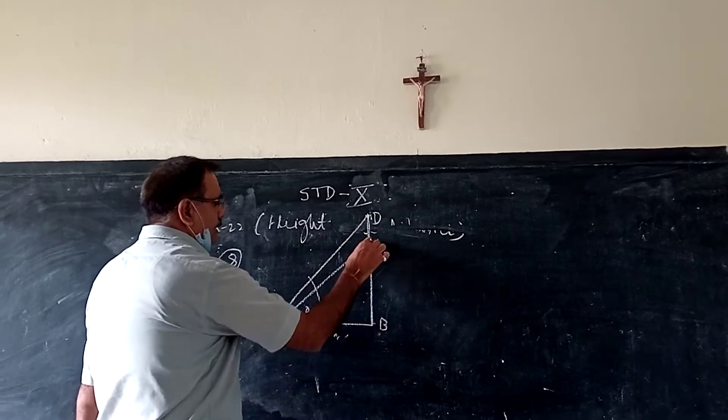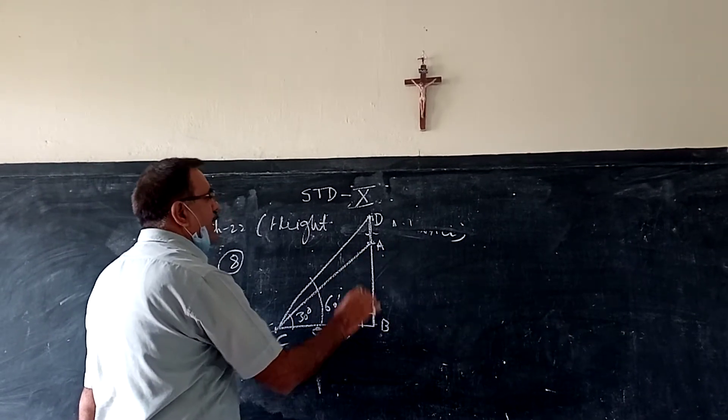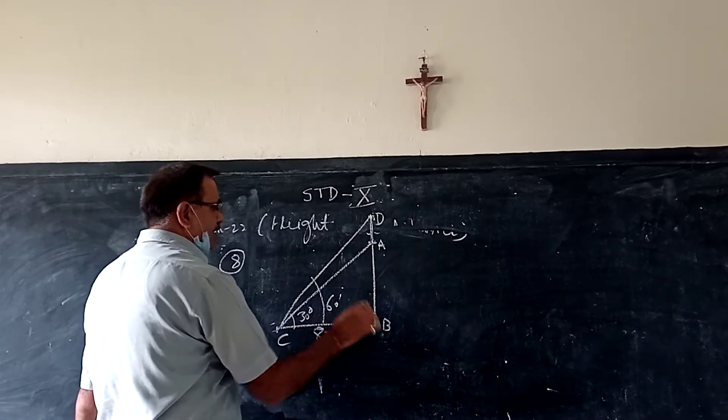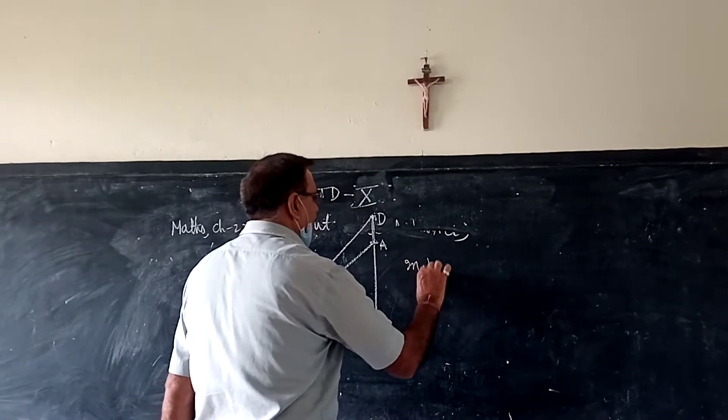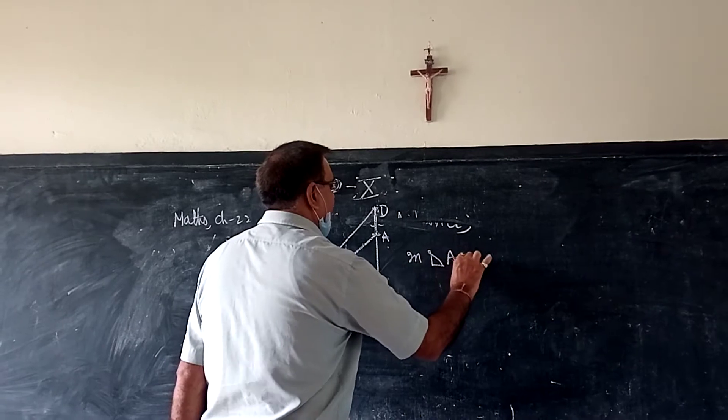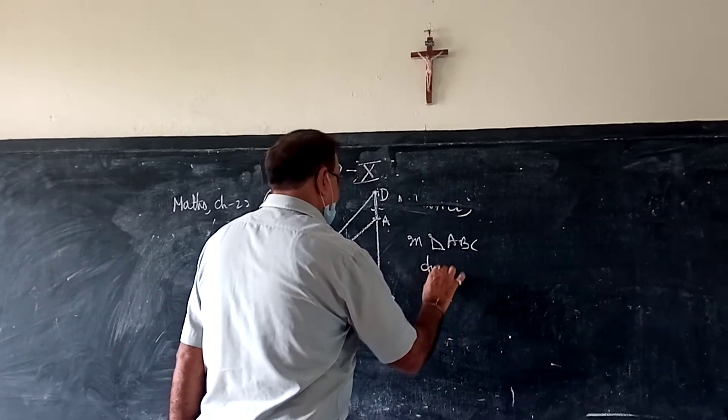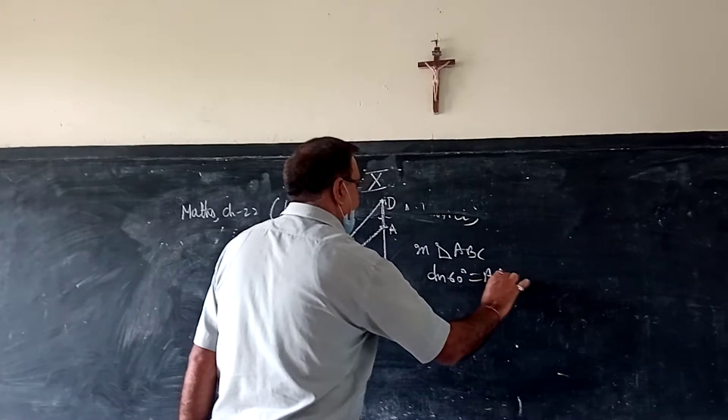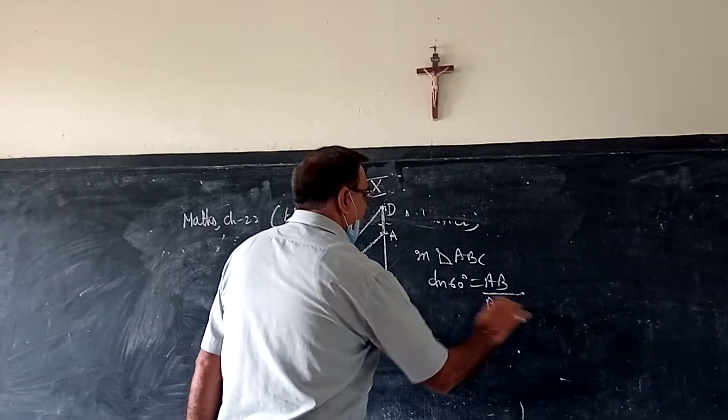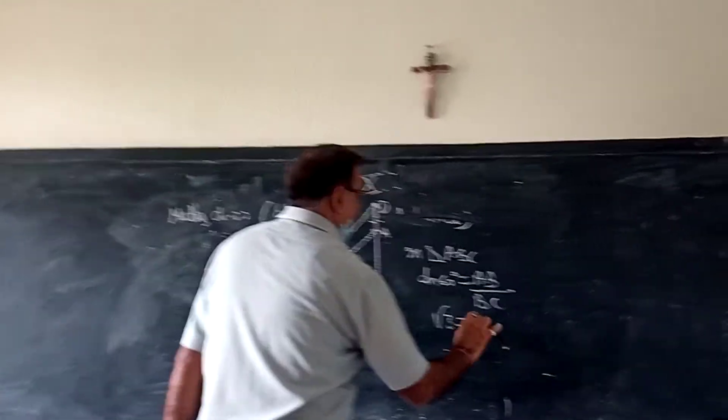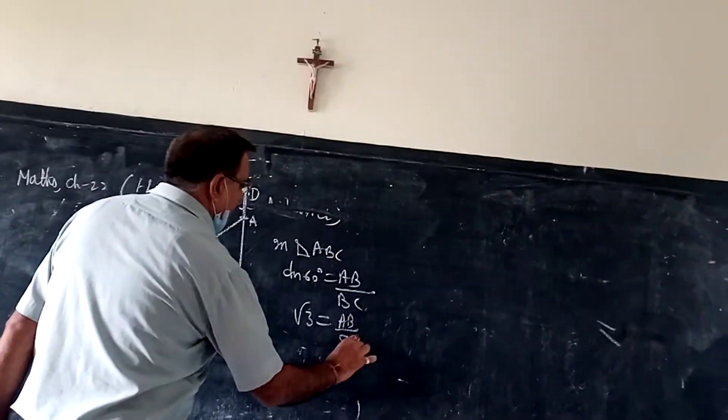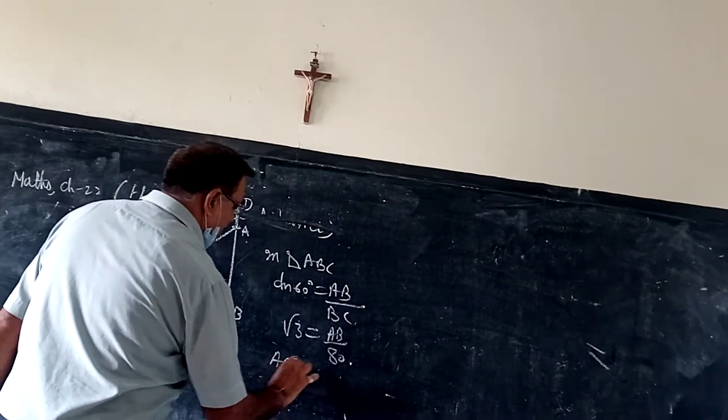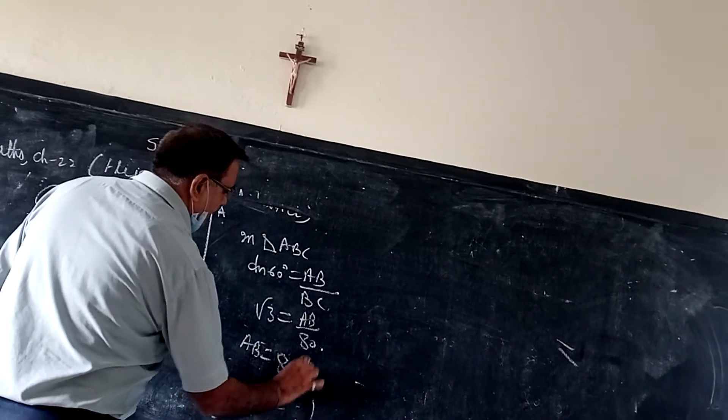So there are two right angle triangles. ABC right angle at B, and DBC right angle at B. When you take triangle DBC, tan 60 degree equals DB by BC. Tan 60 is root 3. DB not given, BC given 80. So DB equals 80 root 3 centimeters.